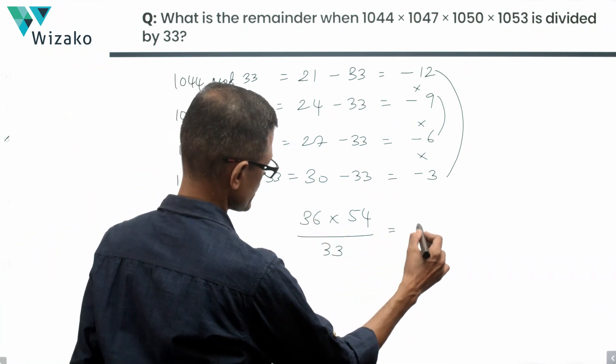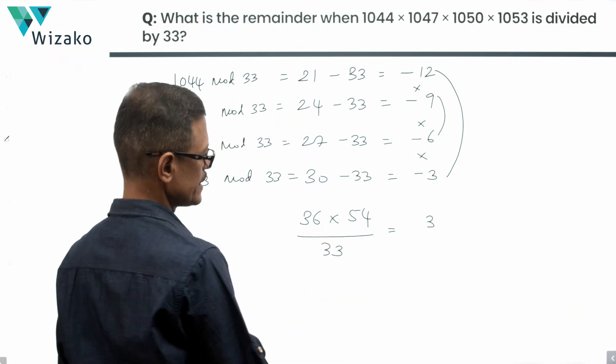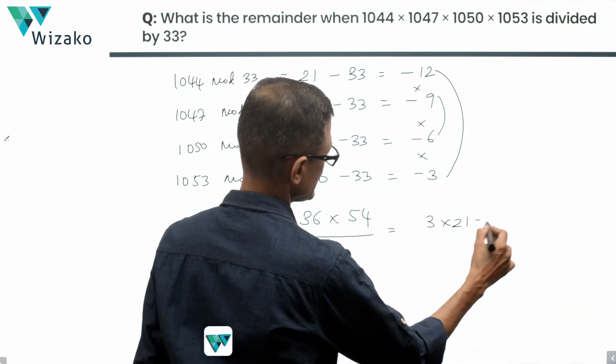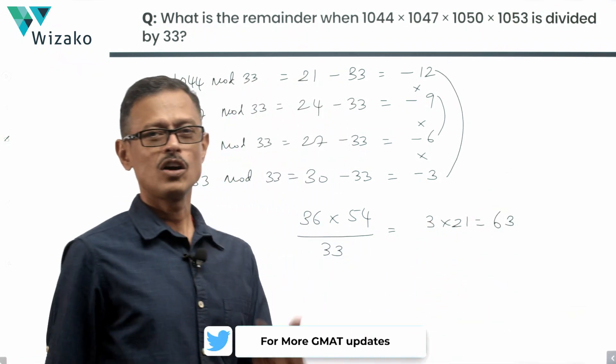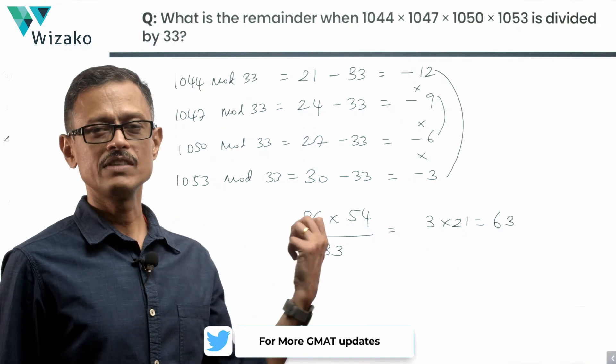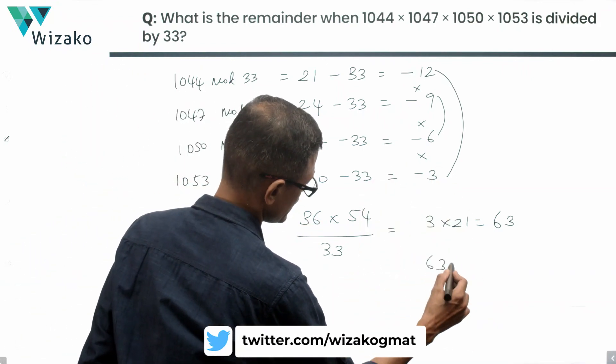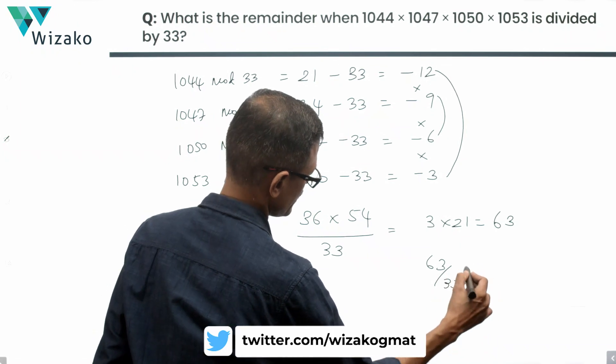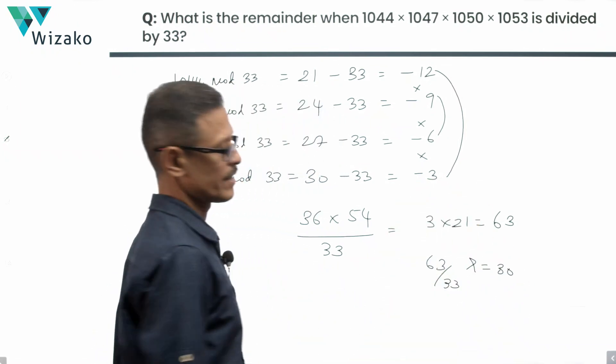36 by 33, the remainder is 3. And 54 by 33, the remainder is 21. So the final remainder is 63. Obviously, 63 cannot be the remainder when 33 is the divisor. Divide this 63 by 33 to arrive at the remainder. Remainder is equal to 30.